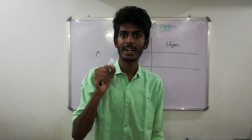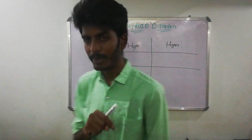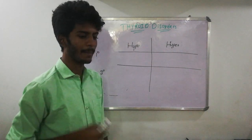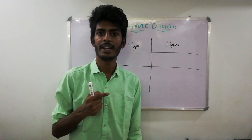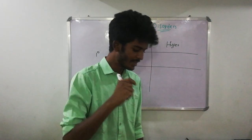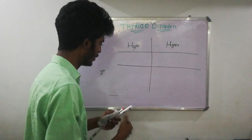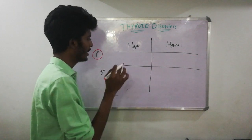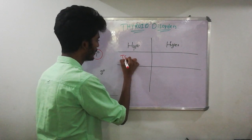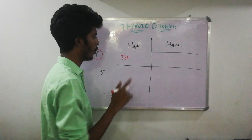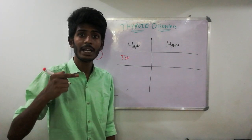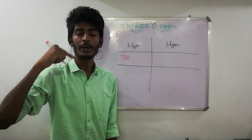Secondary means the disorder is secondary to some disease associated with the pituitary. For example, secondary hypothyroidism means the pituitary gland is not working, leading to decreased production of TSH. When TSH decreases, thyroid hormone also decreases. In primary hypothyroidism, the pituitary is working fine so TSH starts out normal, but because the thyroid gland is not working, the body senses insufficient thyroid hormones and elevates TSH to compensate.